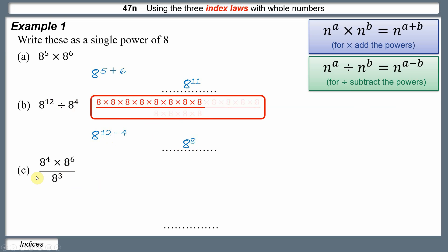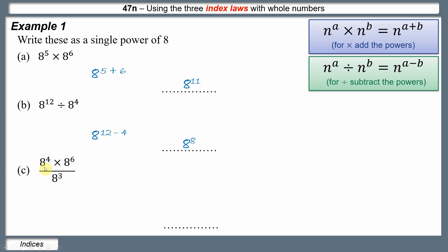For part c we need to use both rules. First apply the multiplying rule on the top: add the powers to get 8 to the power of 10 plus 6, which is 8 to the 16. Then divide by 8 cubed — subtract the powers: 16 minus 3 gives us 8 to the power of 13. Wait — the video says 10 plus 6 then minus 3, giving 8 to the 7.